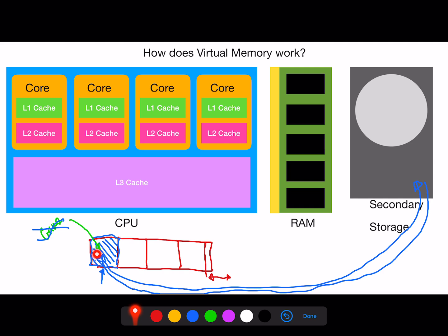So, virtual memory is useful for having multiple programs open by swapping data in and out between RAM and secondary storage. But the disadvantages are that it's slow and may shorten the life of your hard drive slightly compared to normal use.